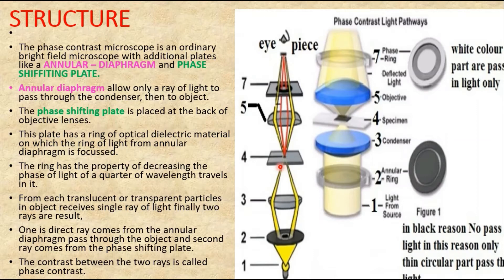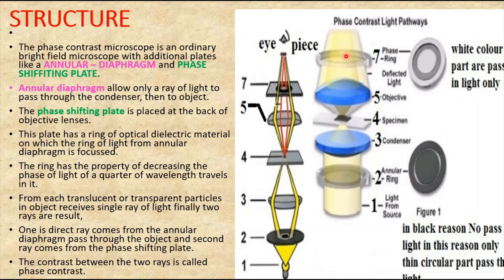The second component is the phase shifting plate, which is attached at the back of the objective. The objective possesses this phase shifting plate, which is composed of a disc of glass having a circular trough etched in it, of such depth that light passing through it creates a phase difference of a quarter of a wavelength compared with the light from the rest of the plate. This decreases the phase of light by a quarter wavelength as it travels through — the key point discussed in the principle.